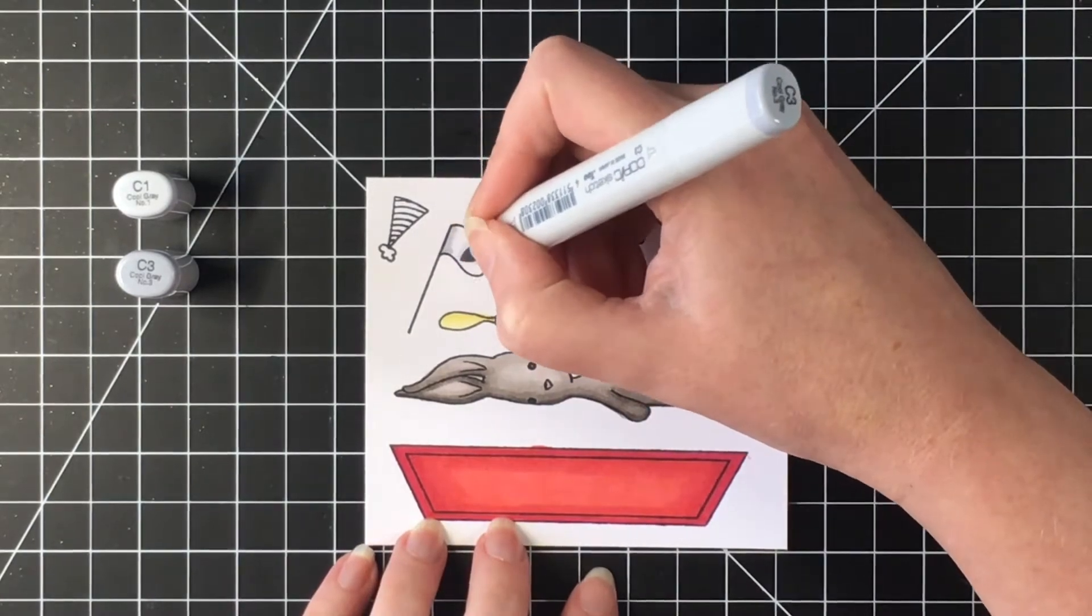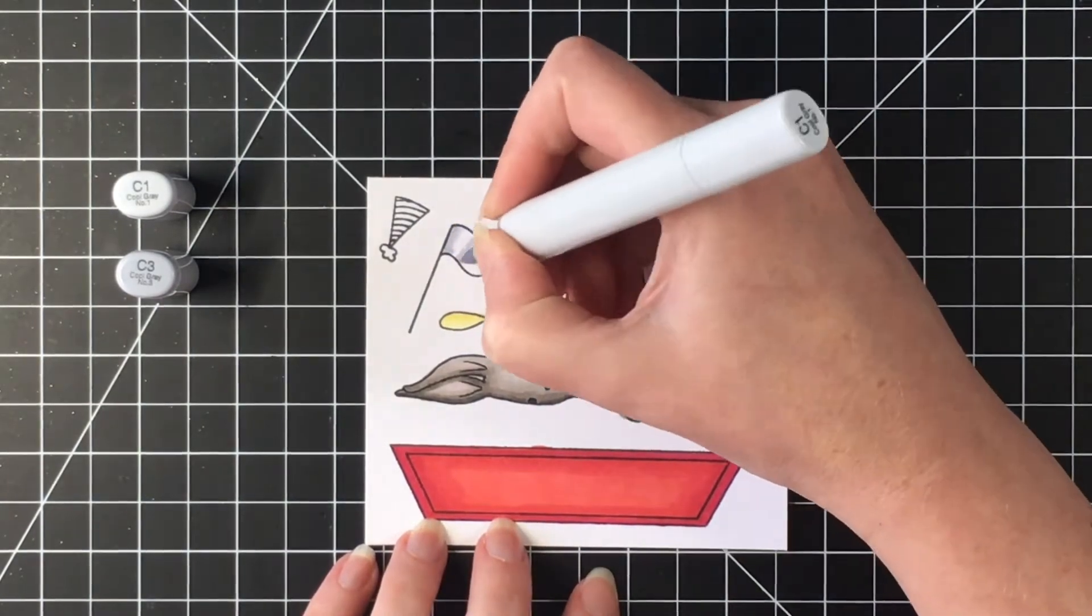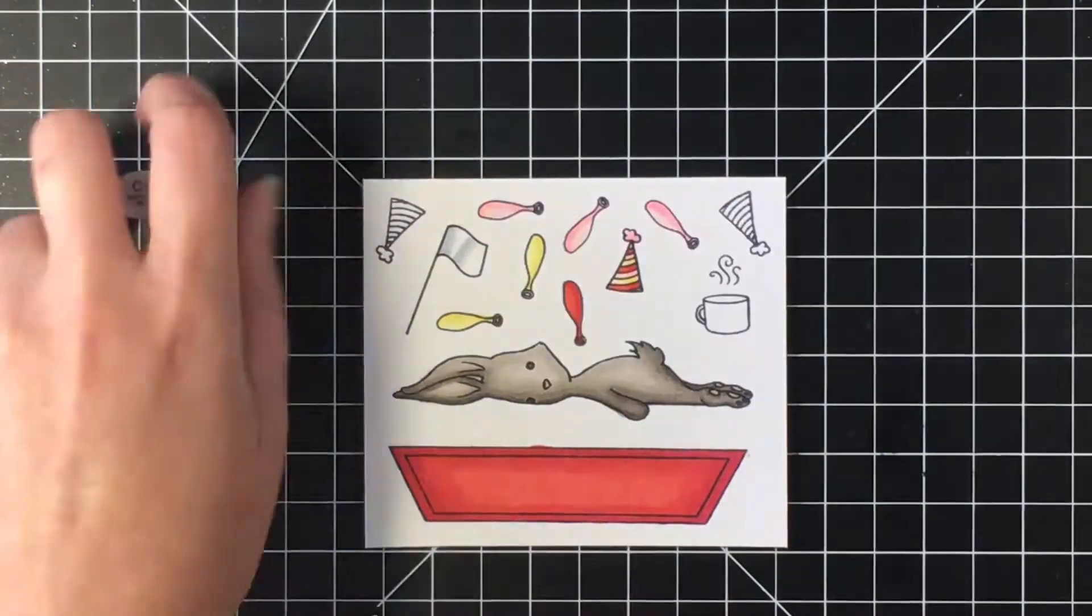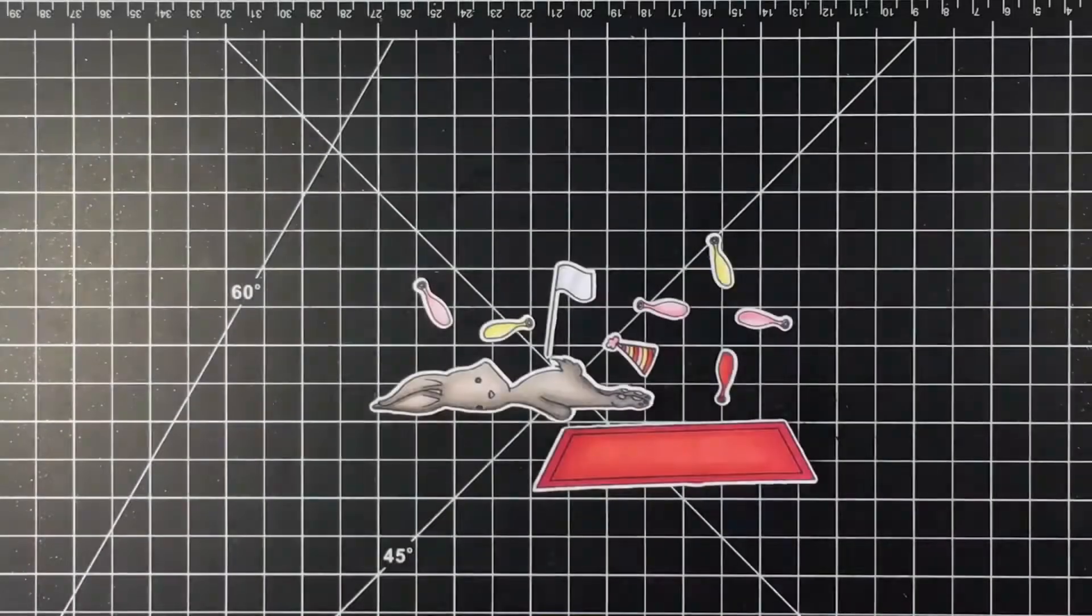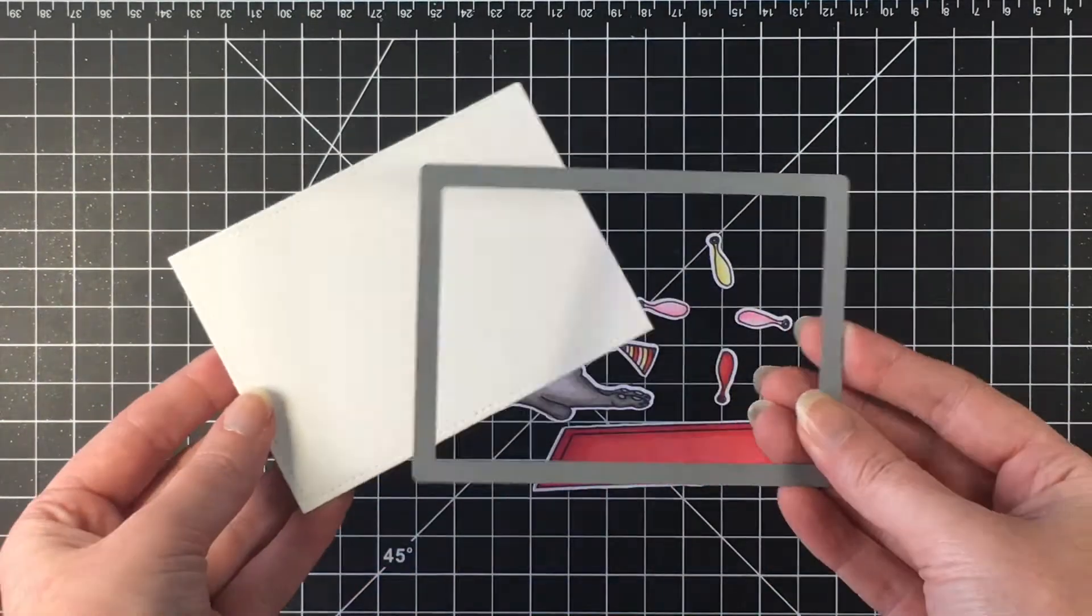So to color the little flag I want it to look white so I'm using some light grays here to give it some dimension. And I put a line in the middle there so it would look like the flag is actually curled and waving.